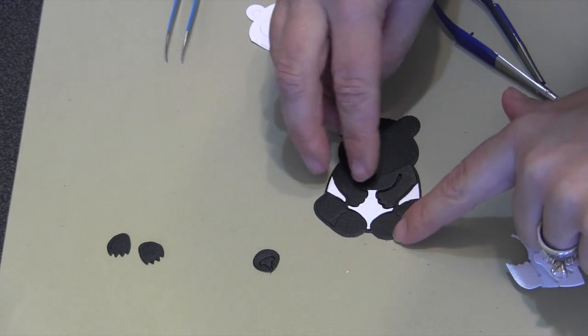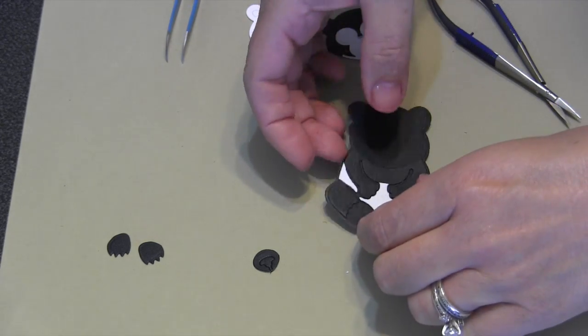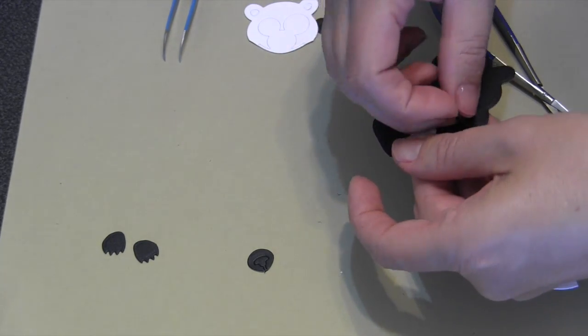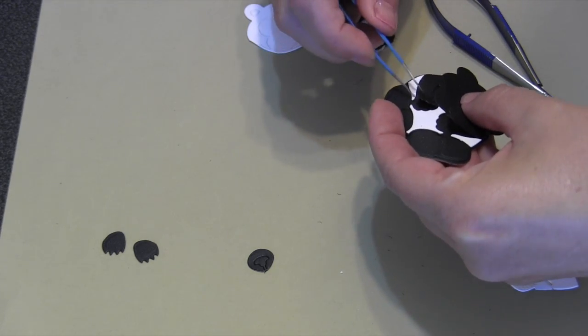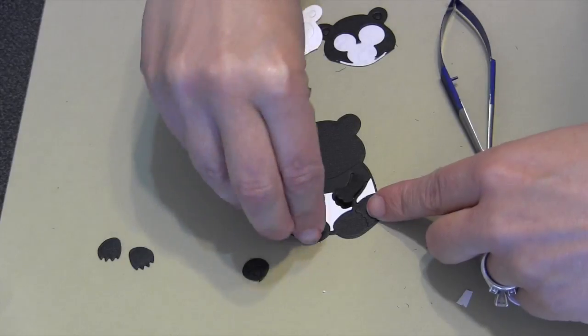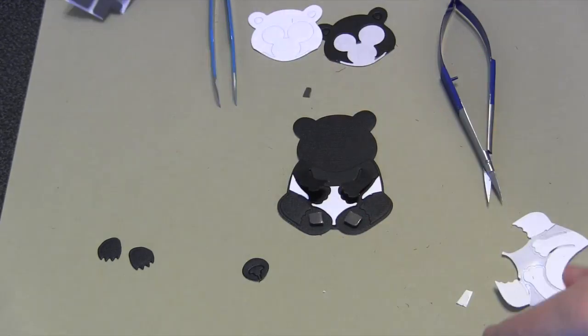For my card, I do plan to have him holding something in his paws, so then I need to go in there and just make sure that the paws aren't stuck down. I'll just go in and peel those right back up again.